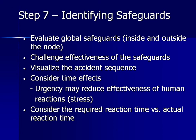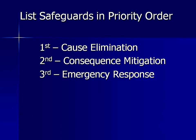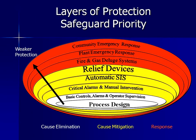In Step 7, we need to add safeguards that are included on the P&ID and control philosophy. We first evaluate global safeguards and challenge their effectiveness, then visualize the accident sequence considering time effects and possible impact of stress and urgency on reaction time. Safeguards are listed in priority: first, items that eliminate causes; next, items that mitigate the consequence; and lastly, human intervention such as emergency response. The first layer of protection is process design, which is the most reliable. As we work outward, we add alarms, safety instrumented systems, reliefs, emergency systems, and emergency response.